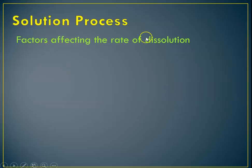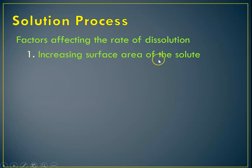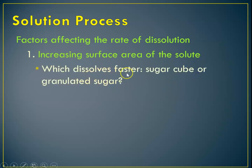So first of all, what things affect the rate of dissolution, which is how something dissolves? Increasing the surface area of the solute helps. Which dissolves faster, a sugar cube or granulated sugar? Granulated sugar, because there's more surface area to contact the solvent.